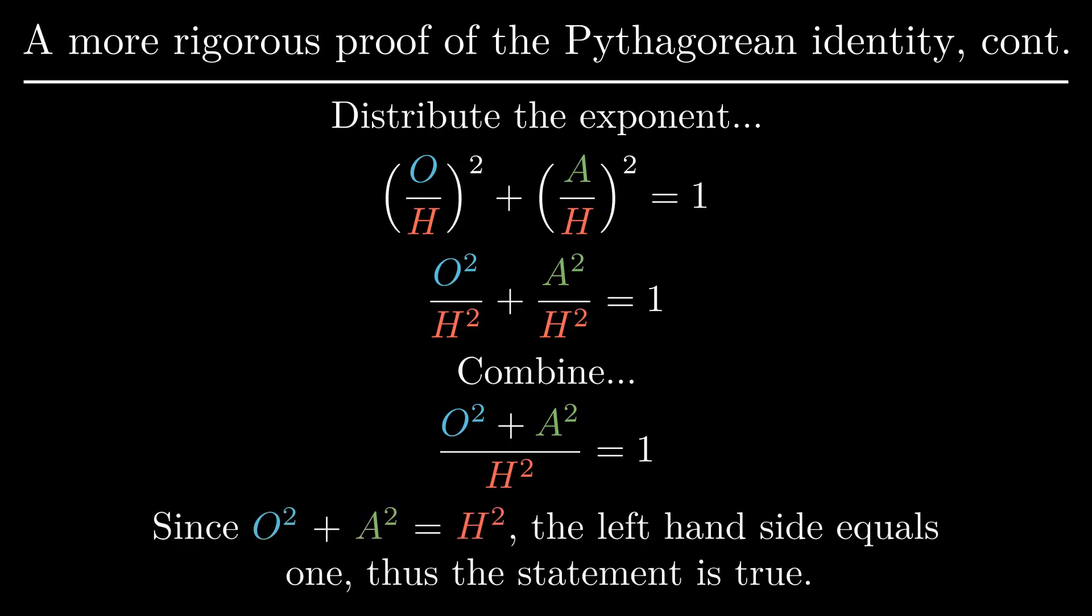To finish it off, since the Pythagorean theorem says that a squared plus o squared equals h squared, and since any fraction whose numerator and denominator are the same is equal to 1, this completes our proof.